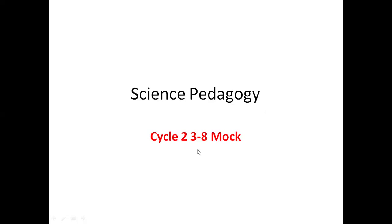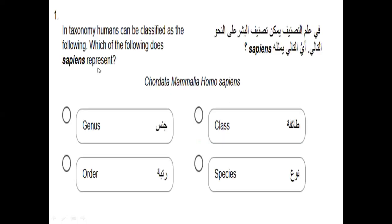Let's start with more questions. Number one — you should remember the human taxonomy, which is a classification of humans compared to other animals. The question asks: which of the following does 'sapiens' in Homo sapiens represent?